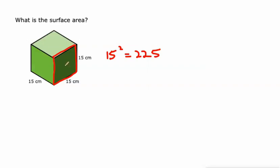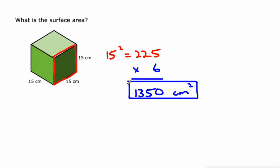Since there's six of them—the front, back, top, bottom, left side, and right side—we just multiply this by 6. So 225 times 6 is 1350 centimeters squared. Each face is 225 and there's 6 of them.